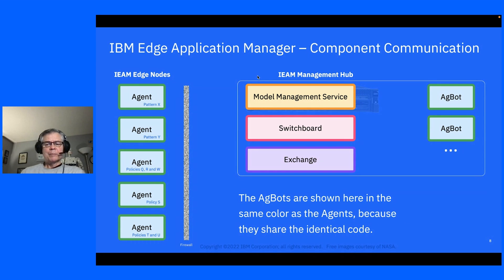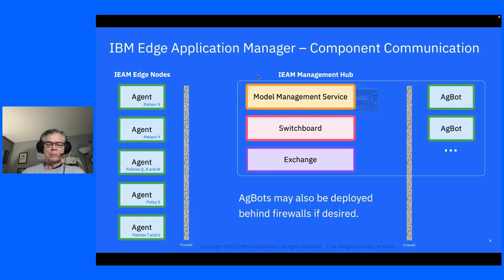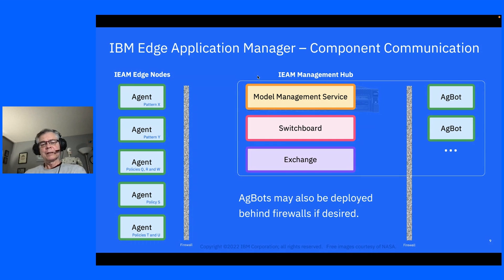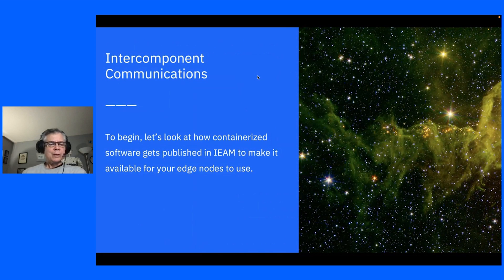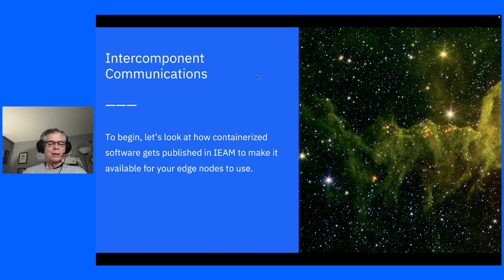I showed the AgBots in the same color boxes as the agent because they actually share identical code. They can be deployed behind firewalls if desired, because nothing ever reaches out to communicate with an AgBot and nothing ever reaches out to communicate with an agent. Instead, the agents and the AgBots communicate to the management hub. Let's take a look at how containerized software gets published in IEAM to make it available for your edge nodes.